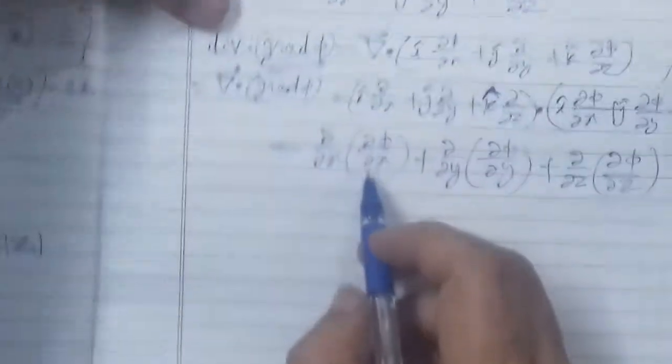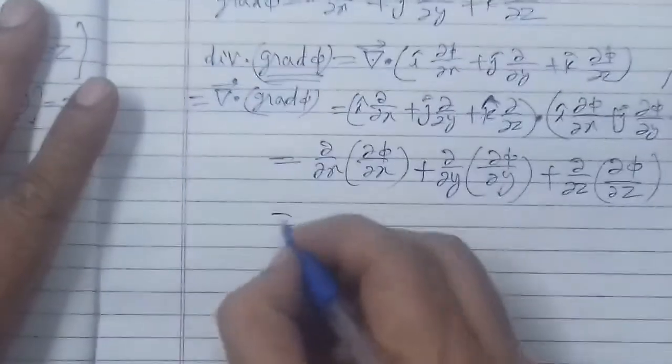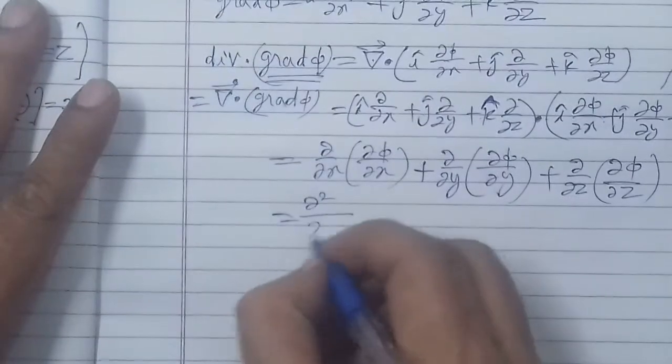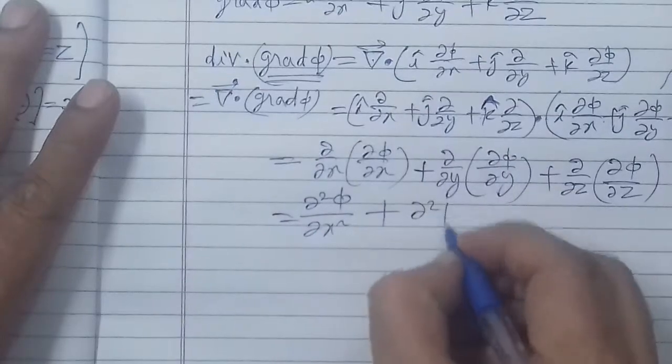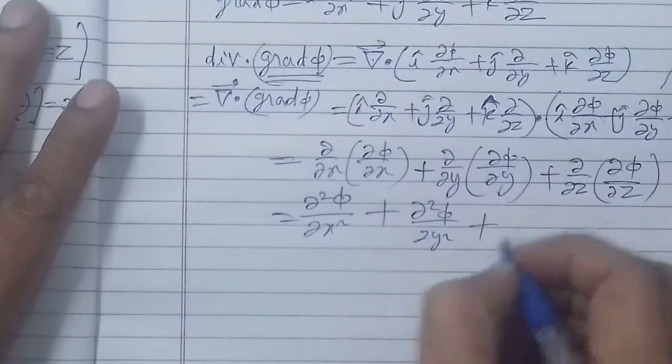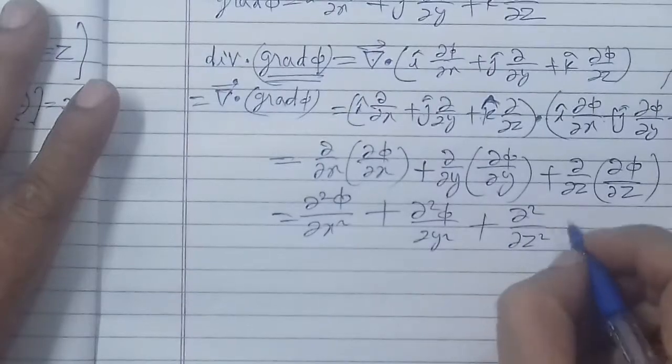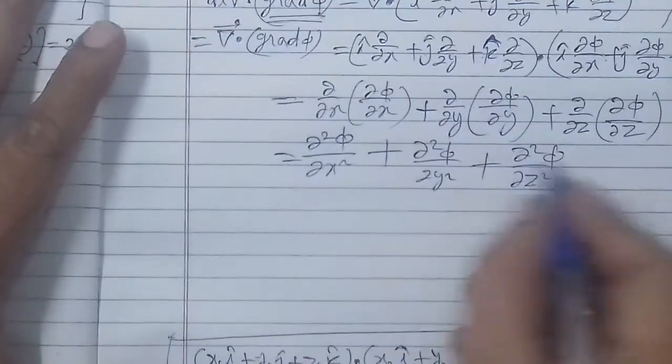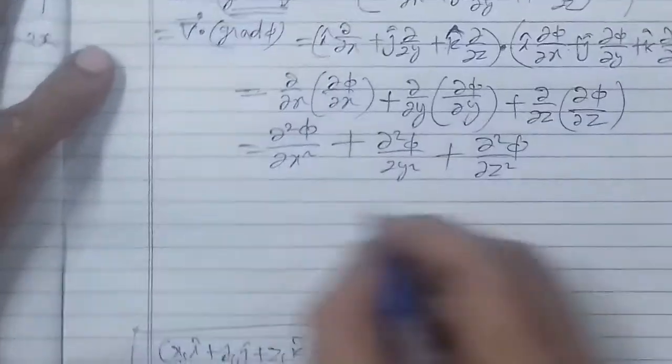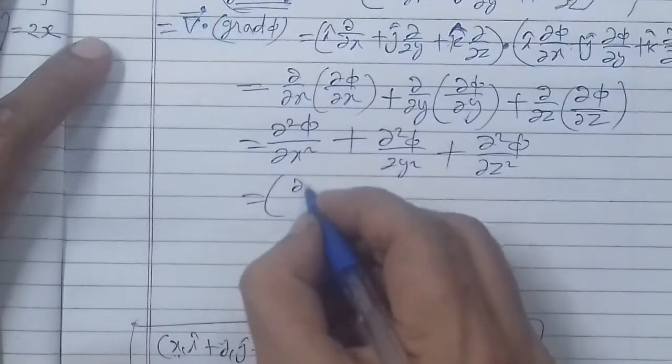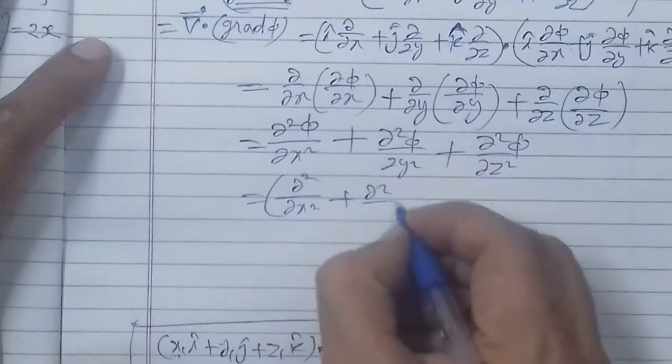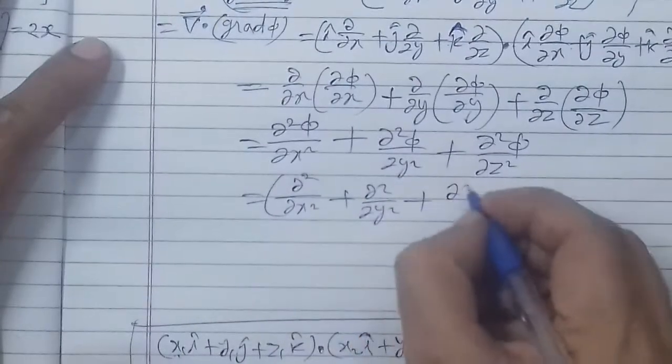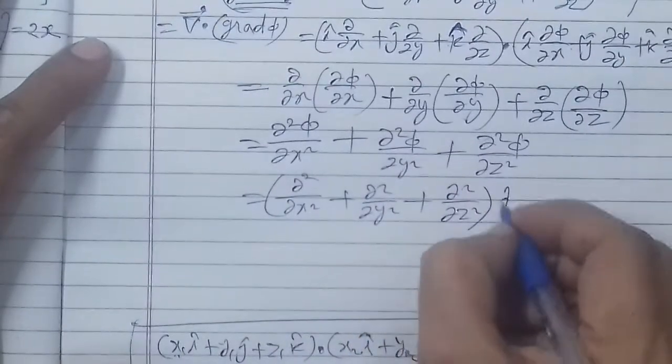Now we have partial derivatives with respect to x, y, z that we are going to note this way: del square phi over del x square plus del square phi over del y square plus del square phi over del z square. In common on the right hand side we have phi and the operator del square over del x square plus del square over del y square plus del square over del z square acting on phi.